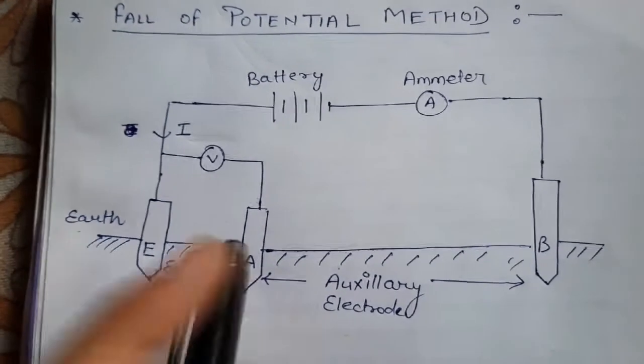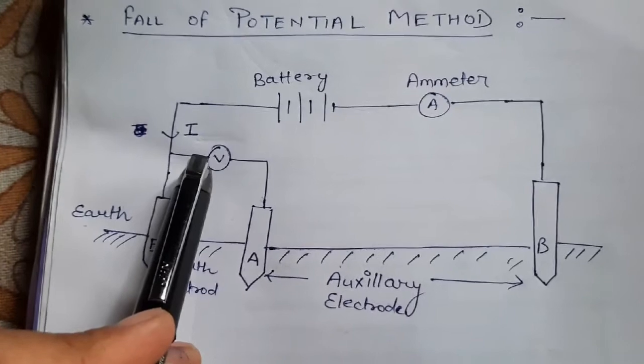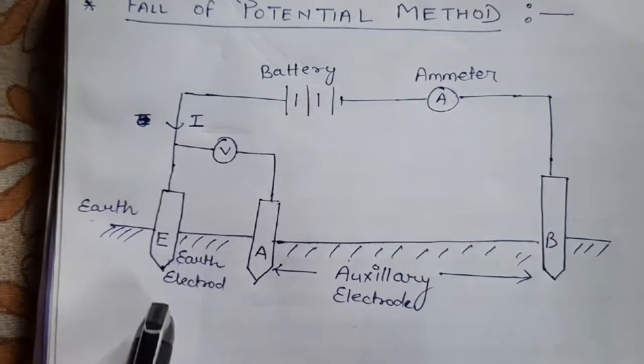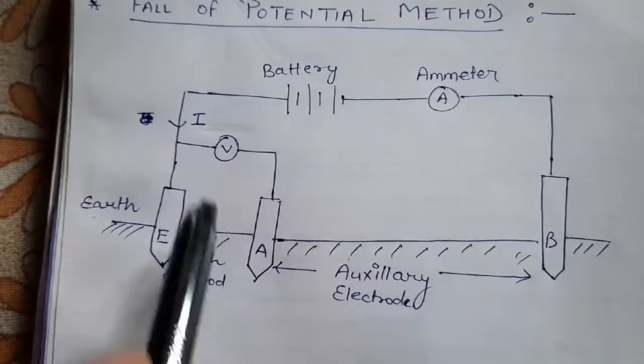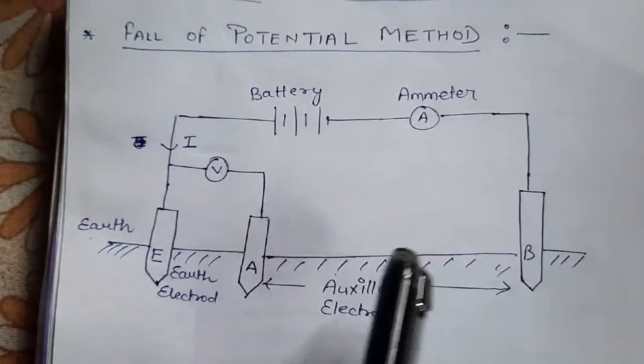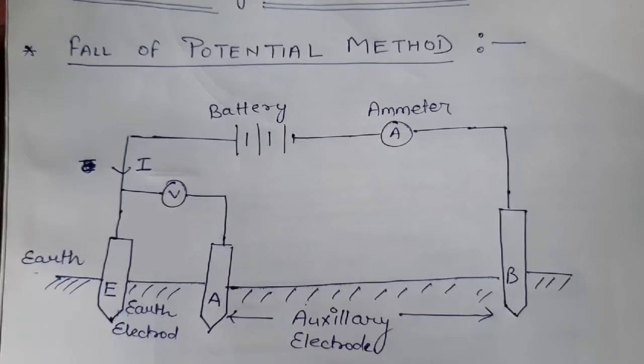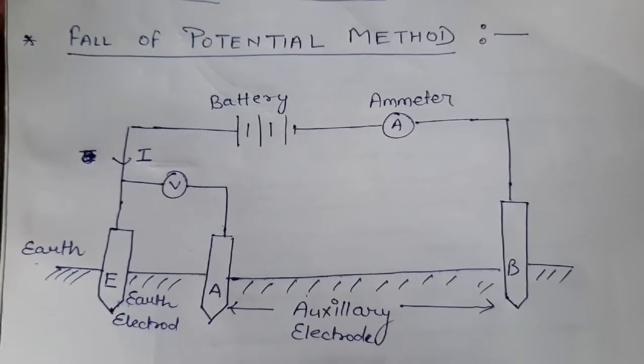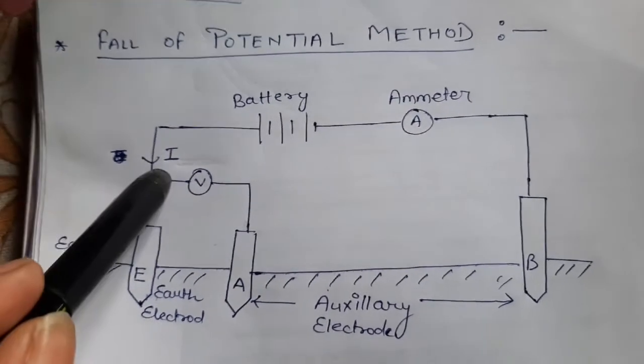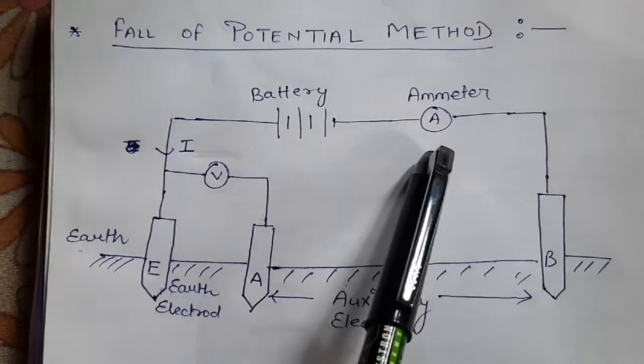A voltmeter is connected which measures the potential difference between E and A. A battery provides supply current I to the circuit, and this current I is measured by the ammeter.